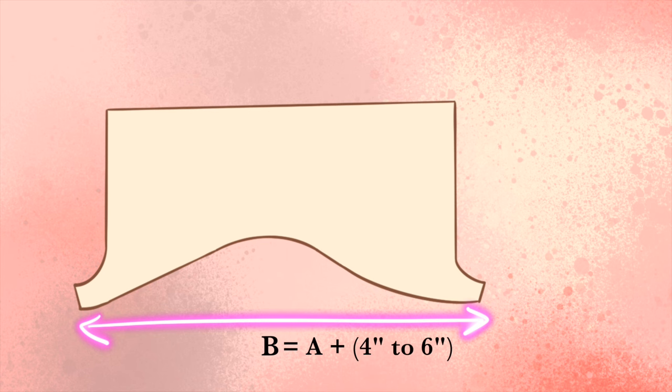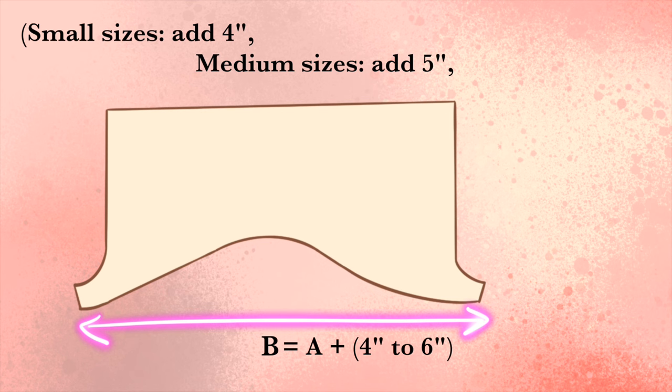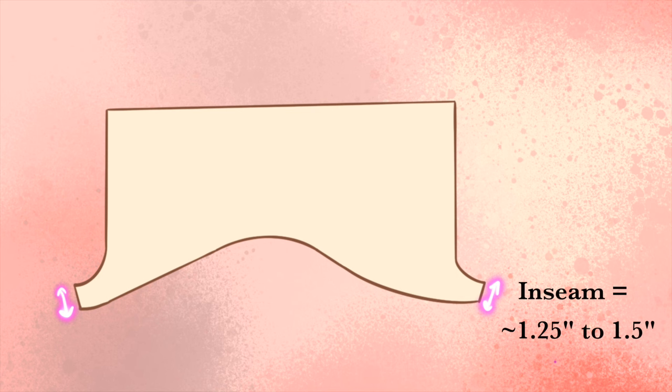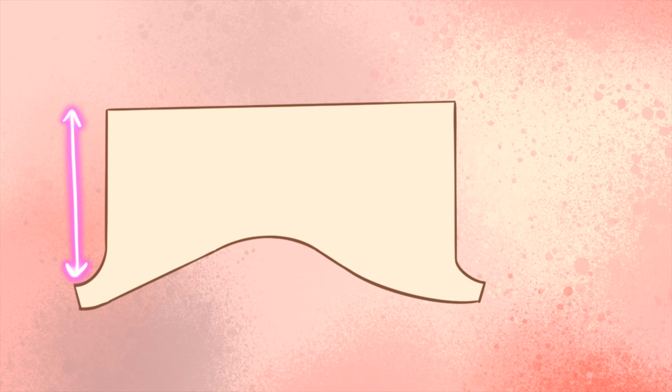To find the measurement for width B, add four to six inches to measurement A. For a smaller size, add four inches. For a medium size, add five, and for a larger size, add six. To help determine how much you'd want to add, you can reference my blog post as I mentioned at the beginning of this video. The inseam should be about 1.25 to 1.5 inches for all sizes.